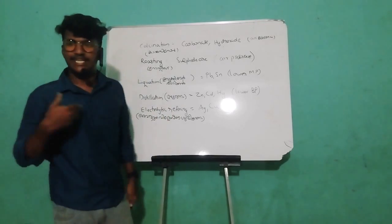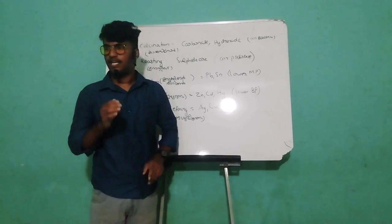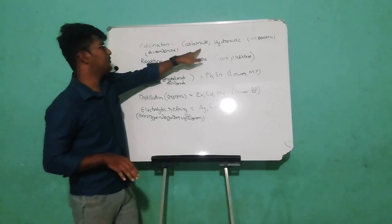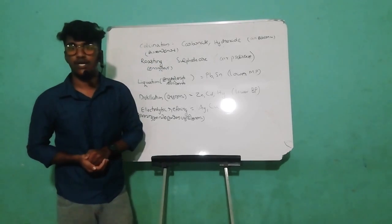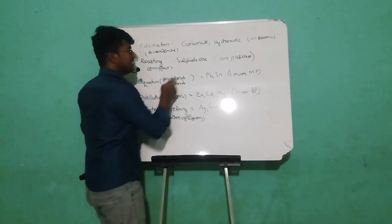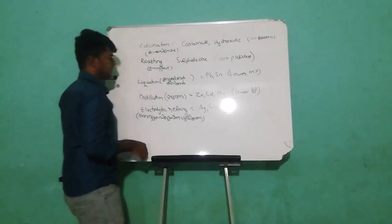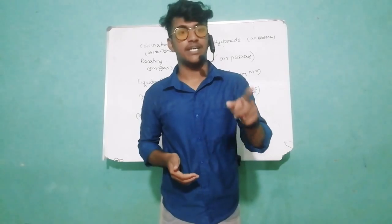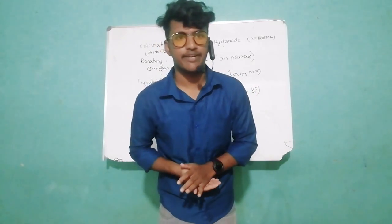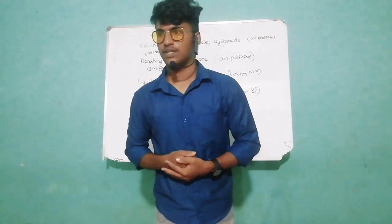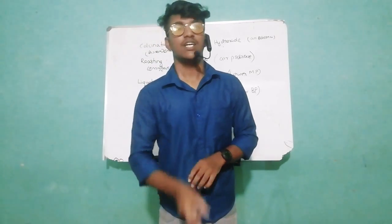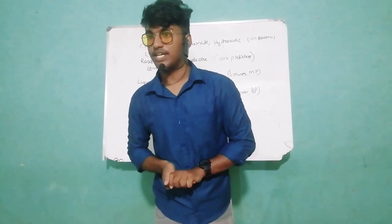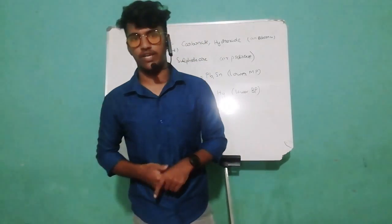If you want to heat above the melting point, calcination is applied to carbonate or hydroxyl ores. Roasting is done in the presence of air and is applied to sulfide ores — converting them through oxidation. Reduction using oxygen removal or hydrogen is used to extract the metal.